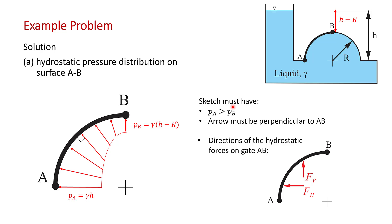One thing you should get from these pressure distribution diagrams is we can see right away the directions of the force of the water on the gate. You can see that all arrows have a horizontal component to the left, so the horizontal force of the water on the gate is to the left. And all arrows except the very bottom one have an upward component, so the net vertical hydrostatic force on surface AB is upward. That's one of the values of drawing these hydrostatic pressure distributions — the directions of the forces become instantly clear.